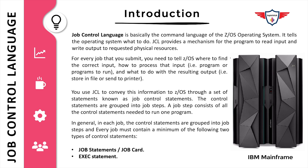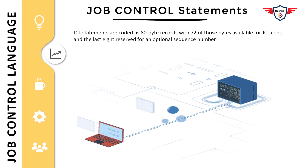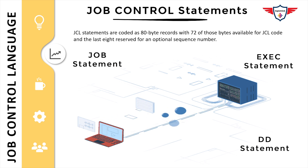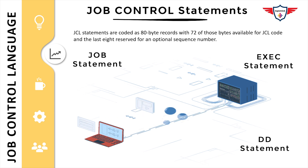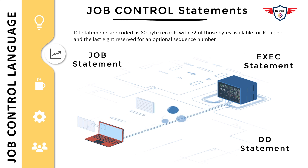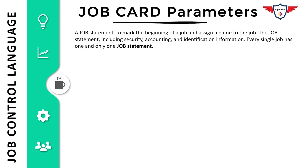Now let's move on to job control statements. In general there are three different types: the first is a job statement or job card, the second is an EXEC statement or execute statement, and the third is DD statements. In this video we will focus on the job card or job statement.